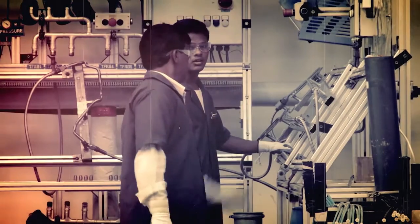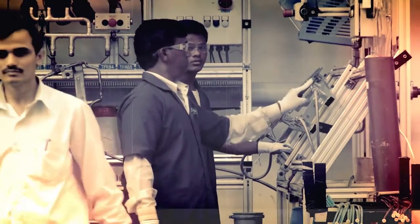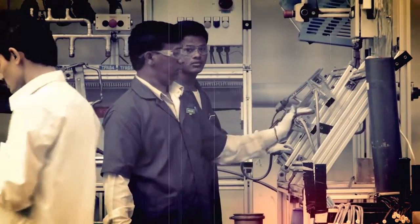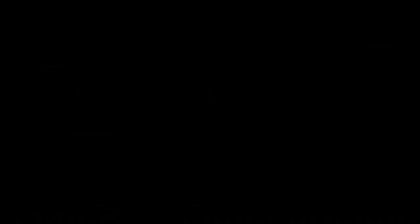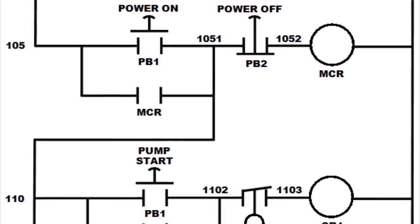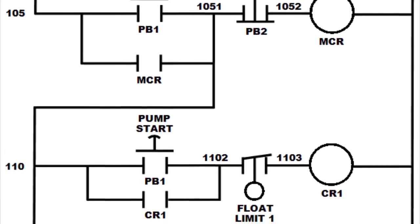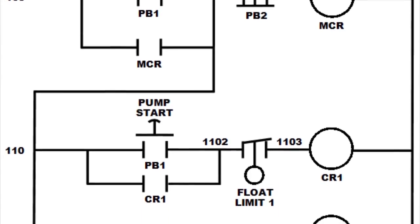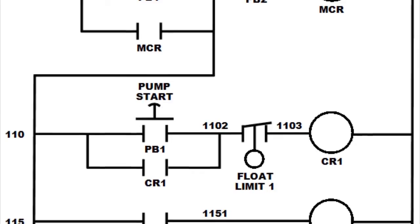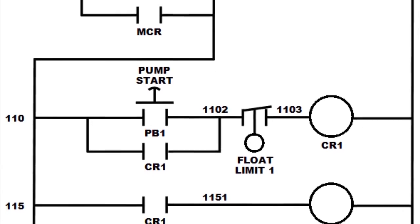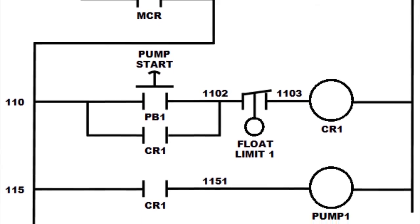Ladder Logic was originally a written method to document the design and construction of relay racks. Each device in the rack would be represented by a symbol on the ladder diagram along with the other external items in the system, like pumps and chillers. These diagrams were used so relay rack setups could be replicated at a later date or in another location.